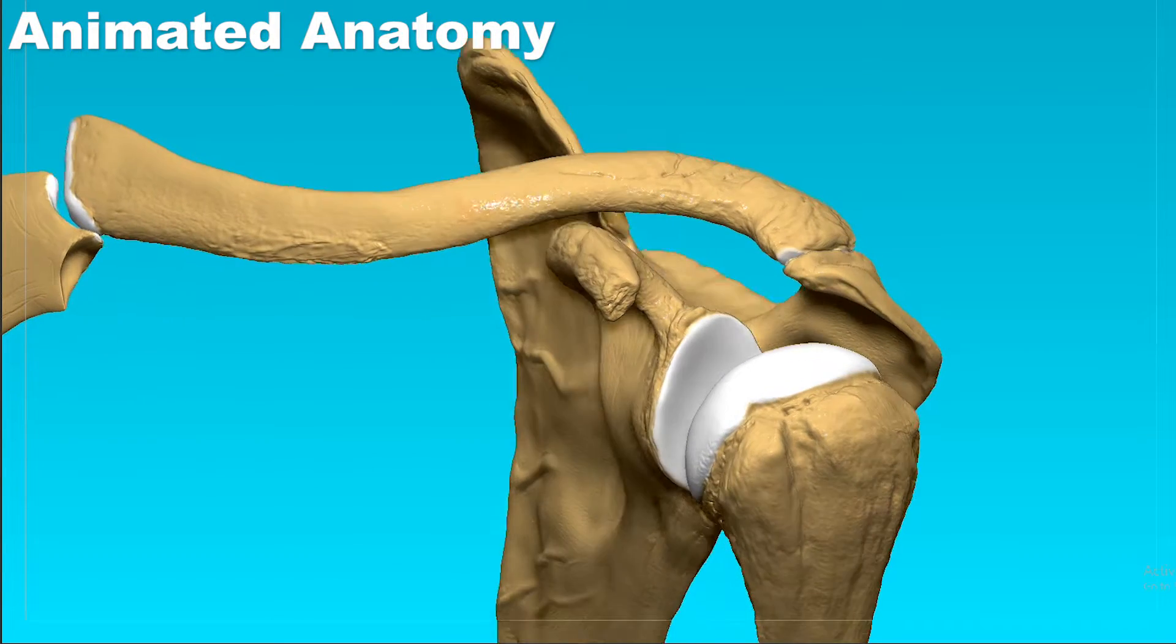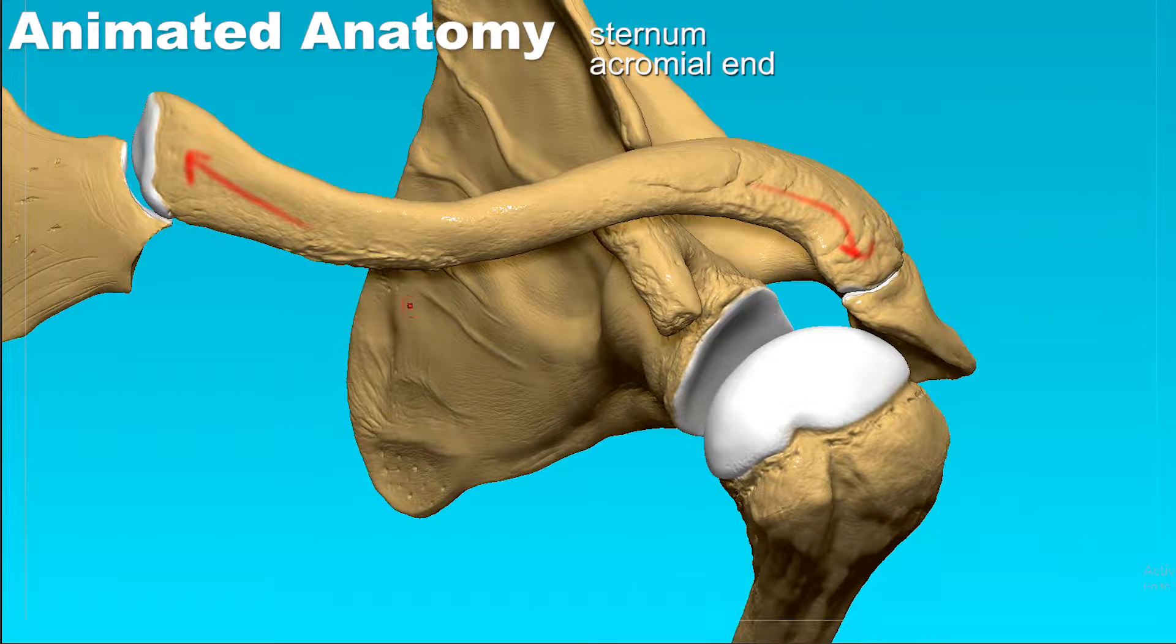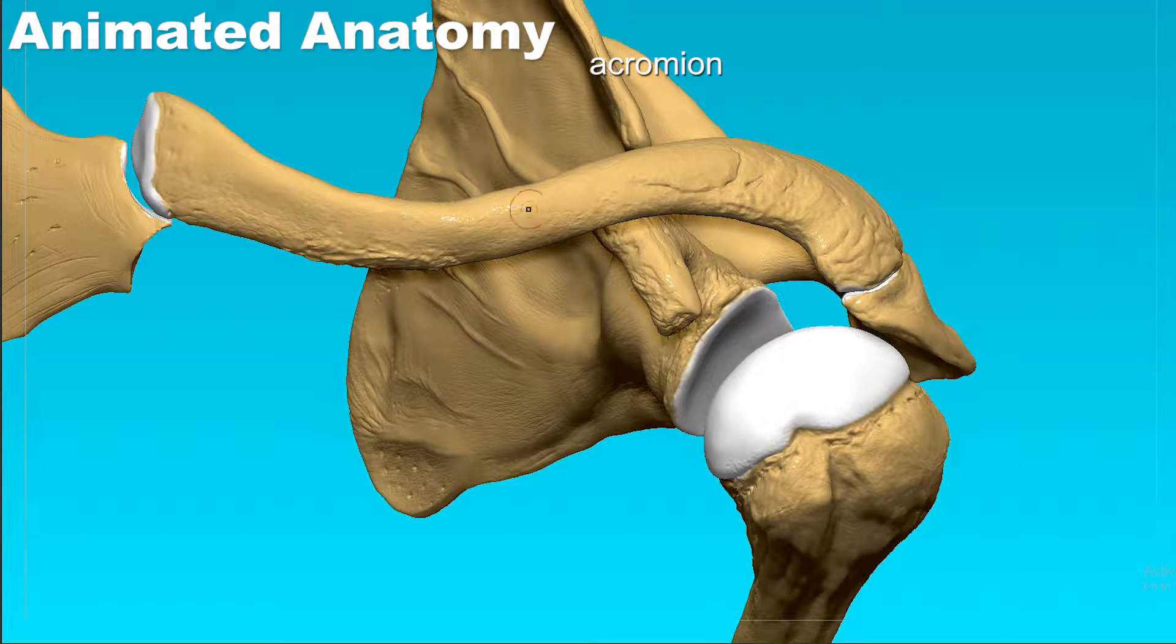The clavicle has a sternal end and an acromial end. Sternal because it articulates with the sternum, and the acromial end because it articulates with the acromion of the scapula. The part in between is called the shaft.